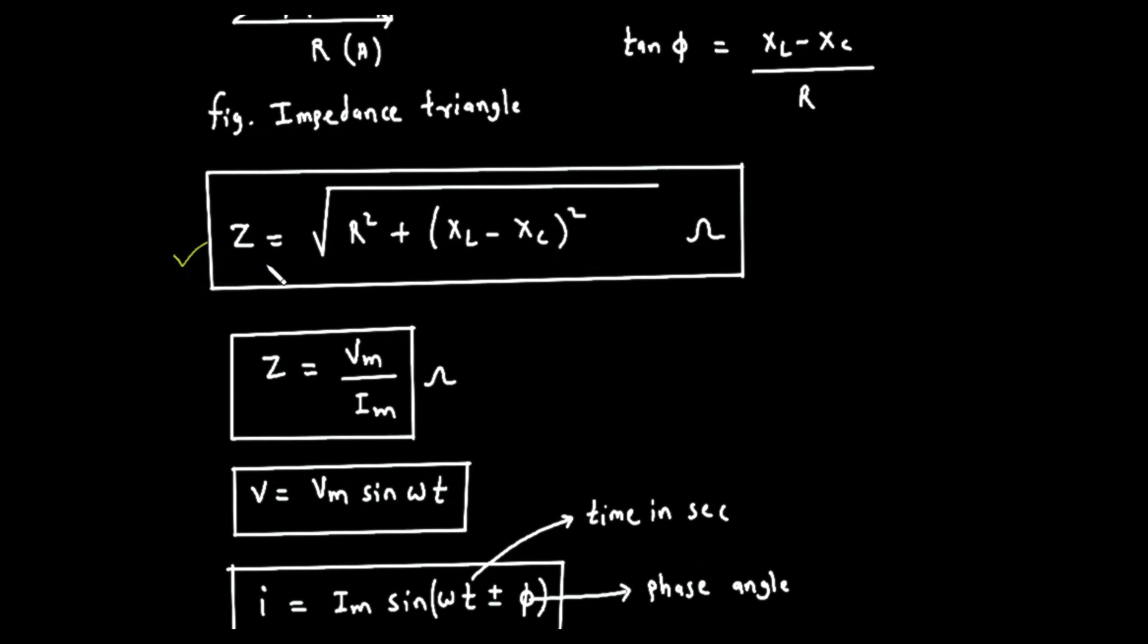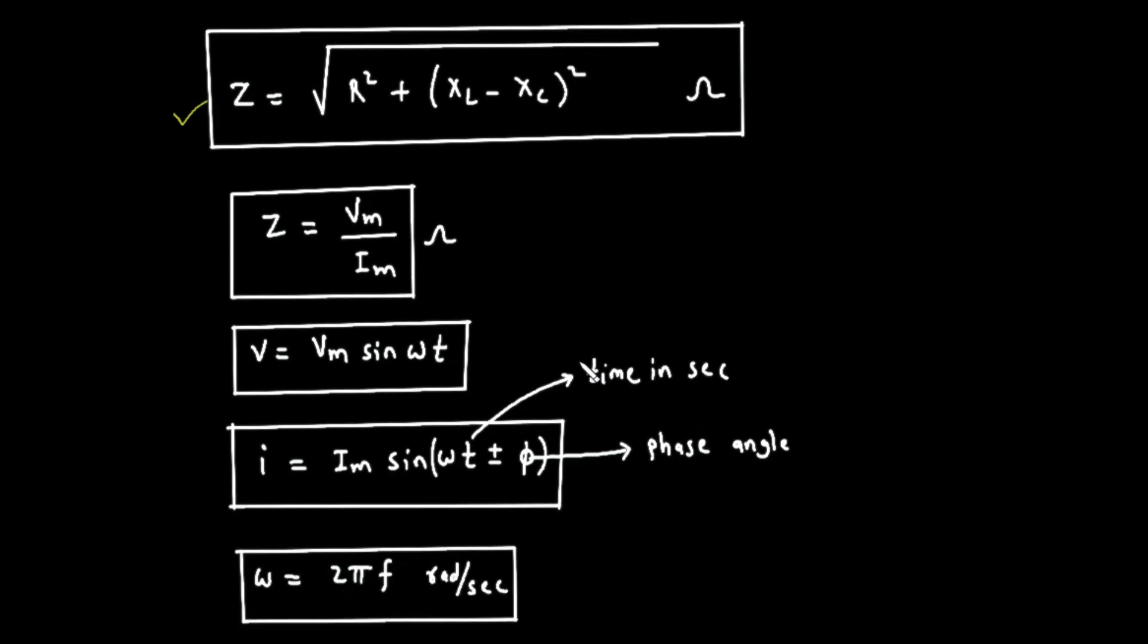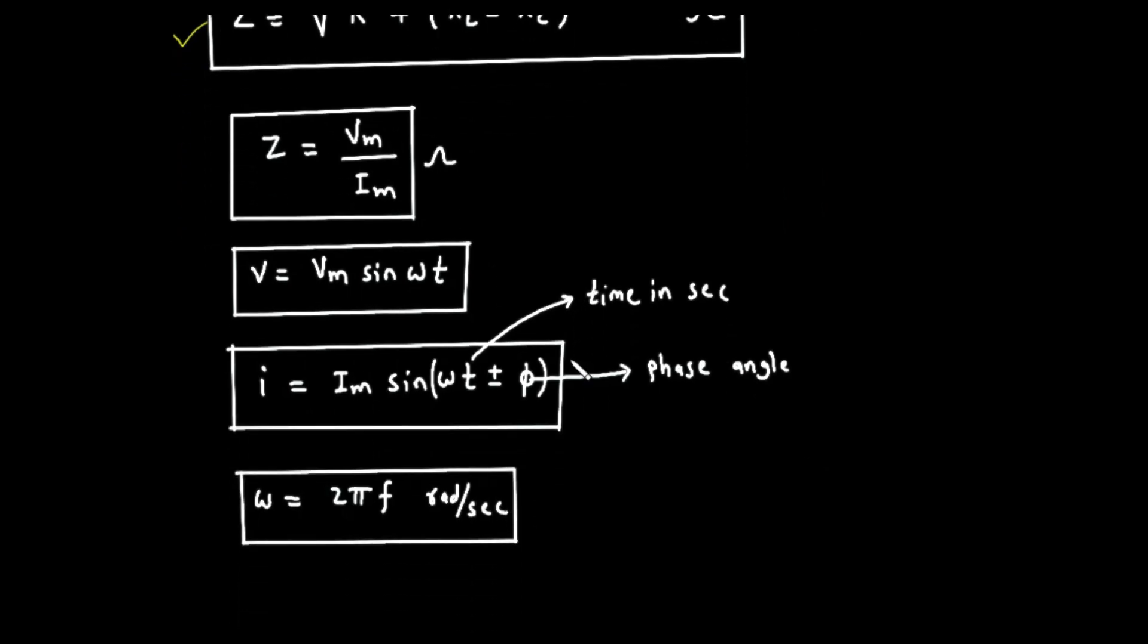Part 5, Summary of key formulas. Let's quickly review the final box formulas at the bottom of the page. Z equals V sub M divided by I sub M. This is Ohm's law for the entire AC circuit. Total impedance equals peak voltage divided by peak current.